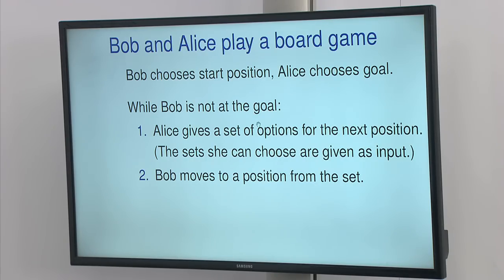Then the game repeats making moves. The move is made in two steps. While Bob has not reached the goal state that Alice wants to drive him to, Alice will choose among a set of options, depending on the current position, and the sets that she can choose from are given as input.